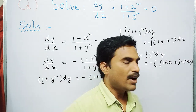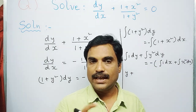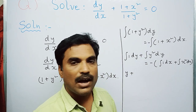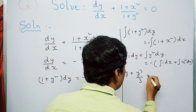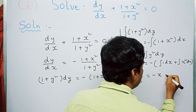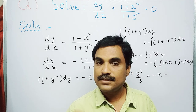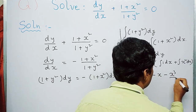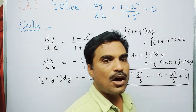Evaluating each integral: ∫1 dy = y. For ∫y² dy, we use the formula ∫xⁿ dx = xⁿ⁺¹/(n+1); here n = 2, so we get y³/3. On the right-hand side, ∫1 dx = x, and ∫x² dx with n = 2 gives x³/3. Therefore the solution is: y + y³/3 = −x − x³/3 + C.